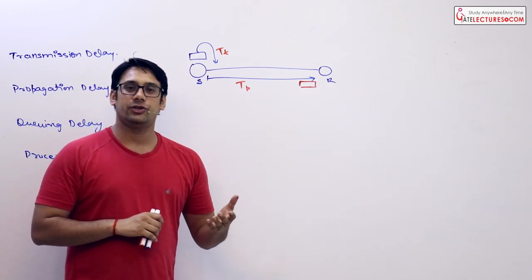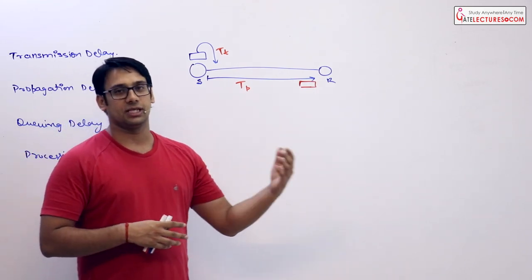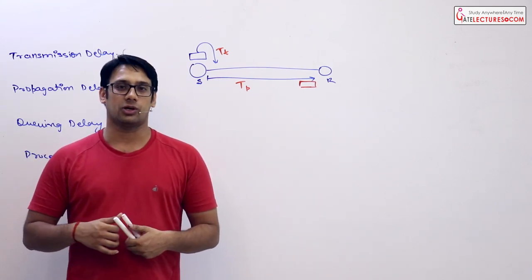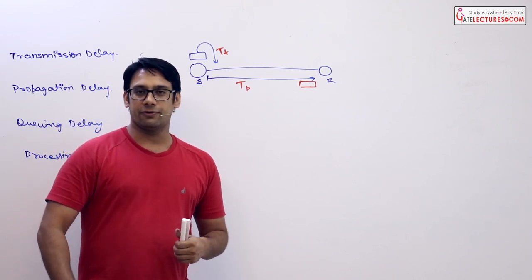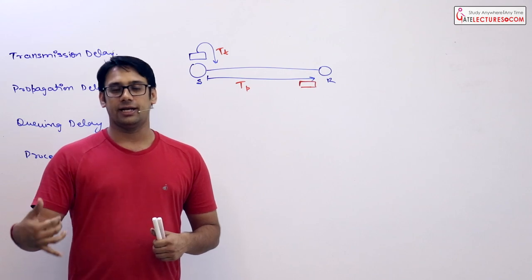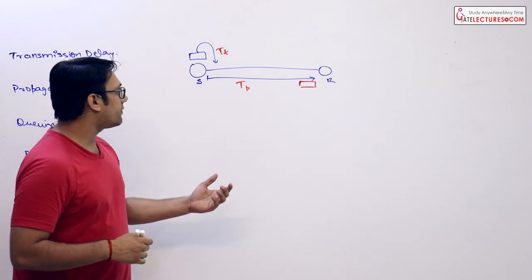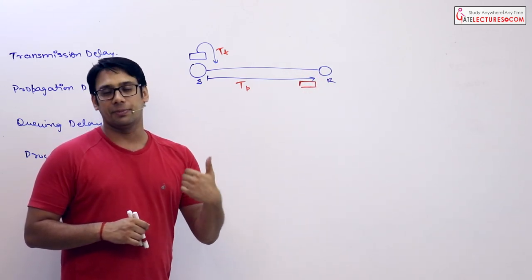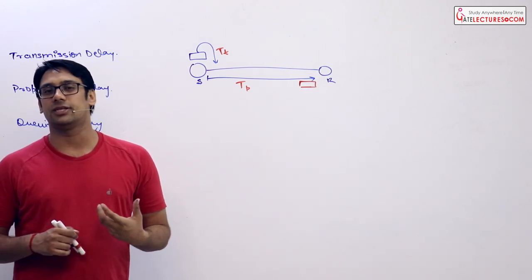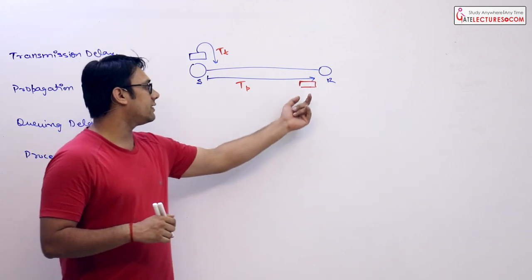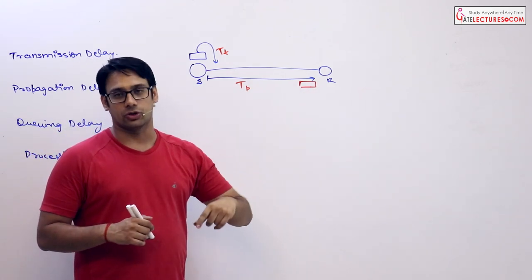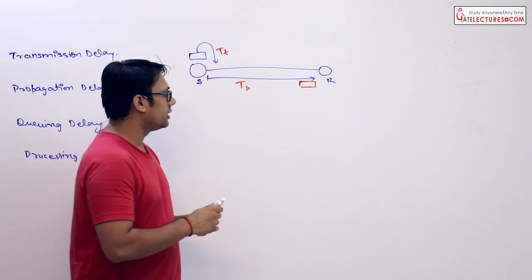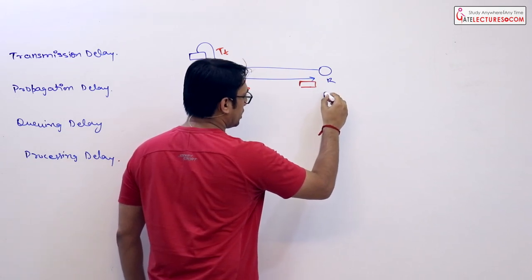For example, if I'm making a call to you and you are busy — in the kitchen, playing football, chatting with friends — you'll keep my call on hold for some time and then pick it up. In the same way, when a data packet reaches the receiver, the receiver may be busy doing some other task, so it will keep this data packet on hold by placing it in a queue.